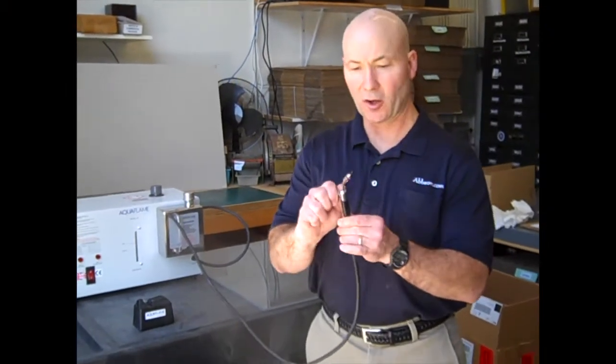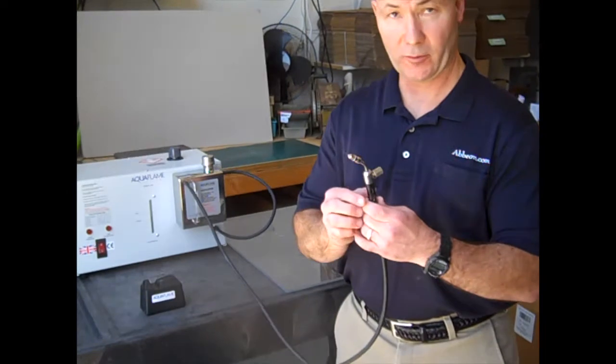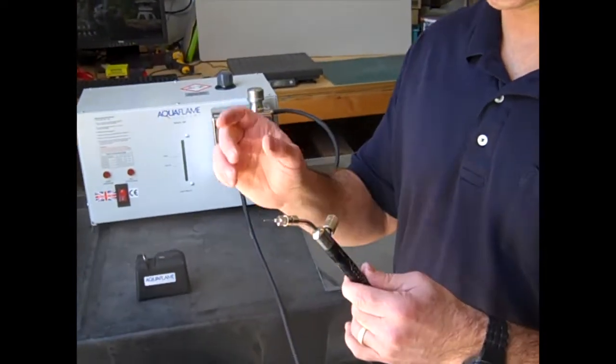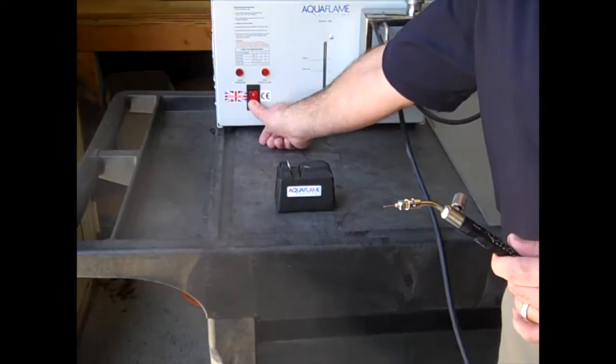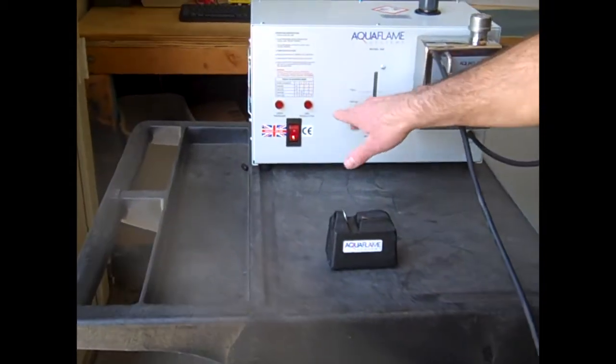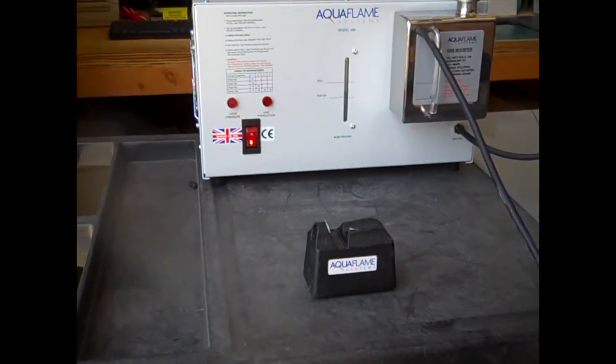Before we do, the torch must be closed and we've got a tip already on here. This is our number 20 tip that we've chosen for this. The size of the tip will determine the area that you can polish. So we'll go ahead and turn it on. And our light went on for a second and now it's off. And both lights are off because the torch is closed.